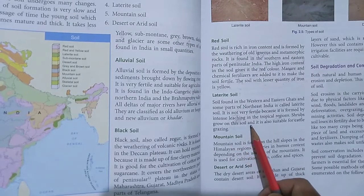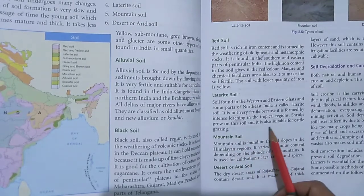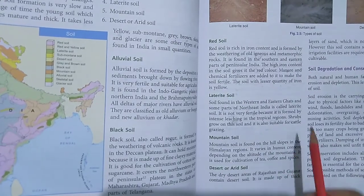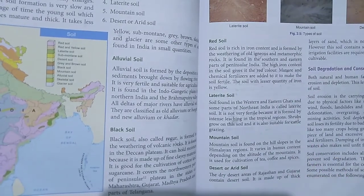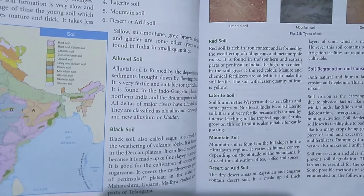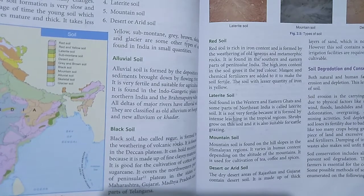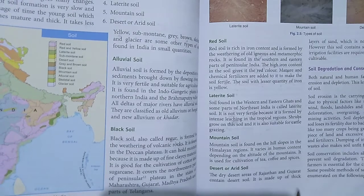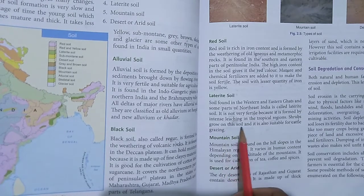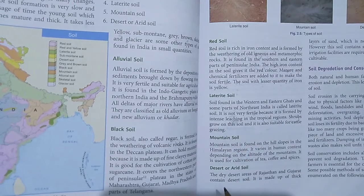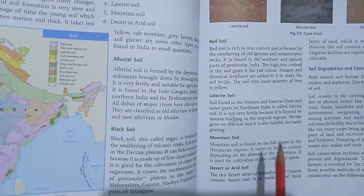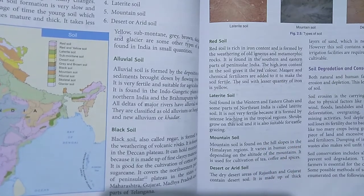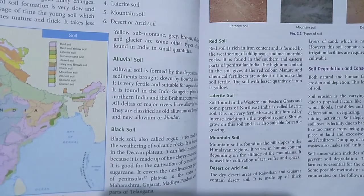Shrubs grow on this soil and it is also suitable for cattle grazing. The plant life is not very tall — it is like grass, called the shrub family. So this soil is used for cattle grazing.